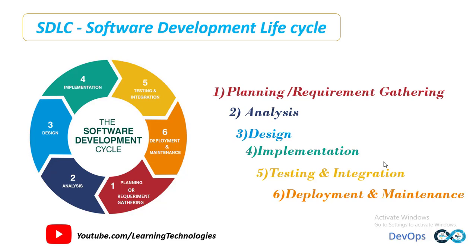I will explain each and every phase one by one in detail, and then we will know what are the issues and drawbacks in the SDLC. In the first phase, planning or requirement gathering, supervisors, partners and clients undergo requirement specification and come up with documents such as FRS, BRS, client customer requirement specification, user requirement specification, and business design document. Every organization will have their own specifications.